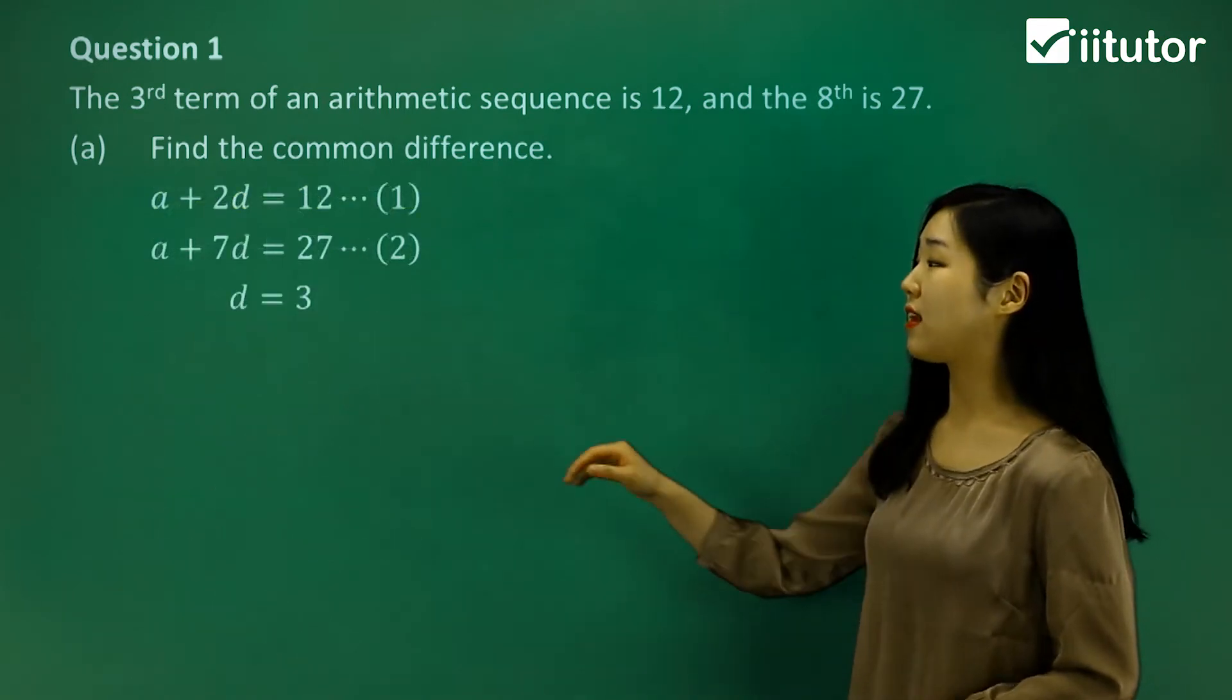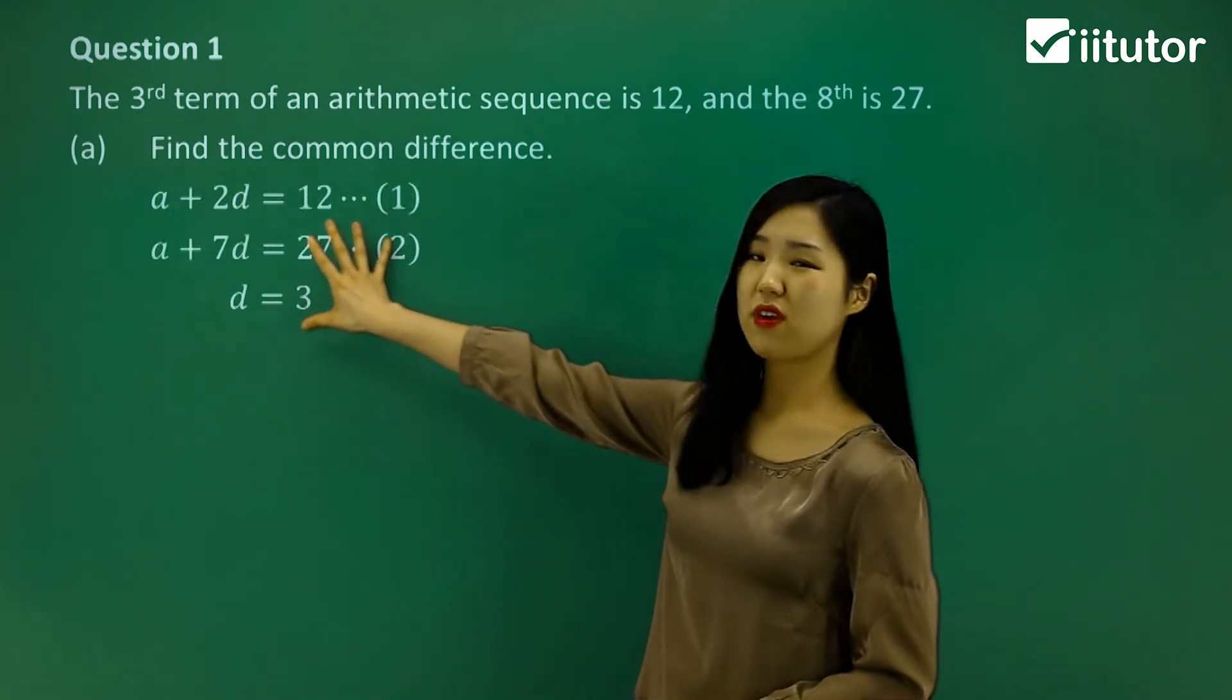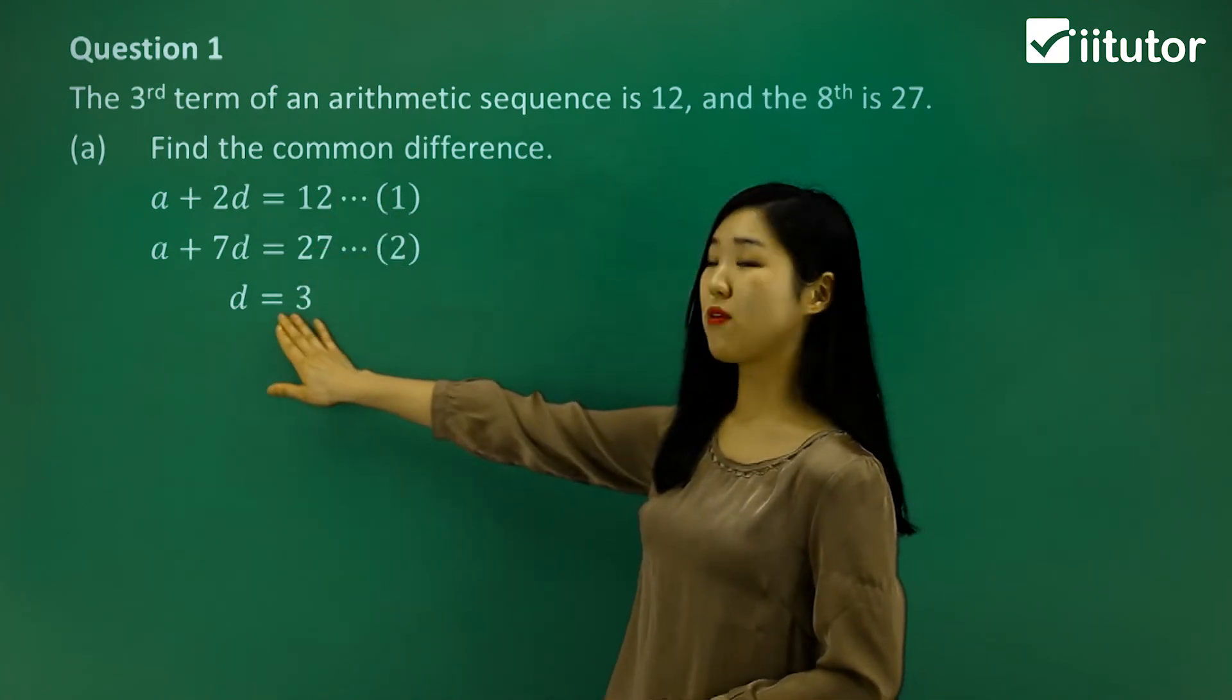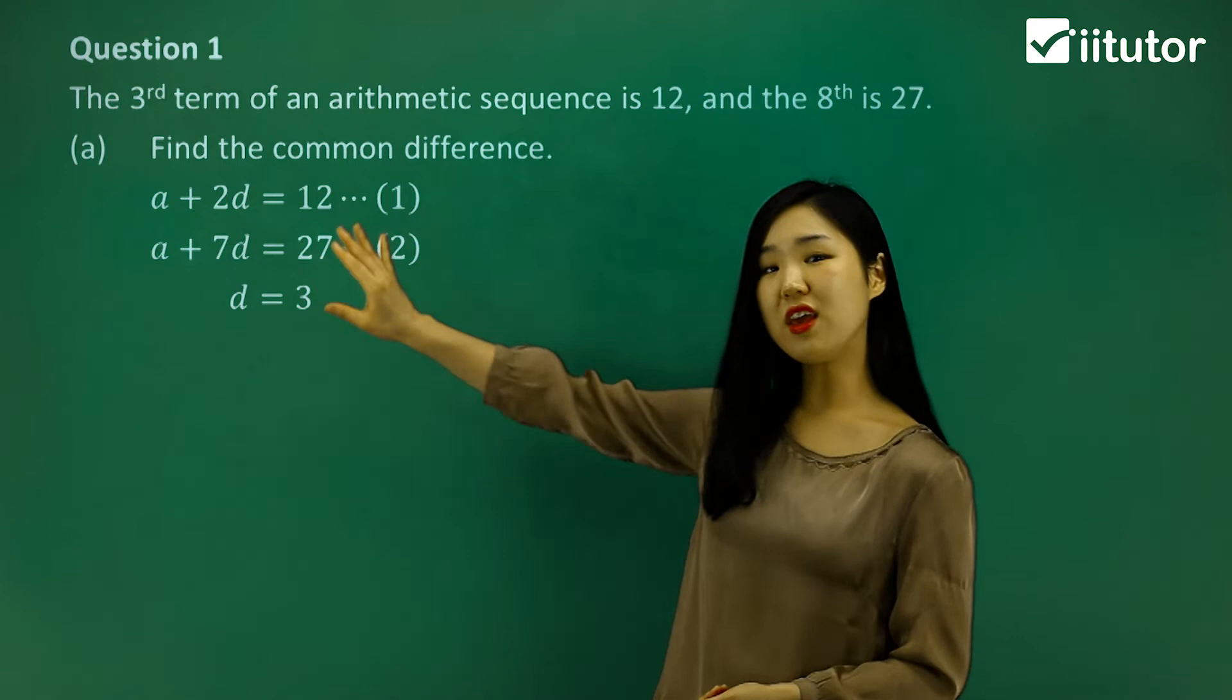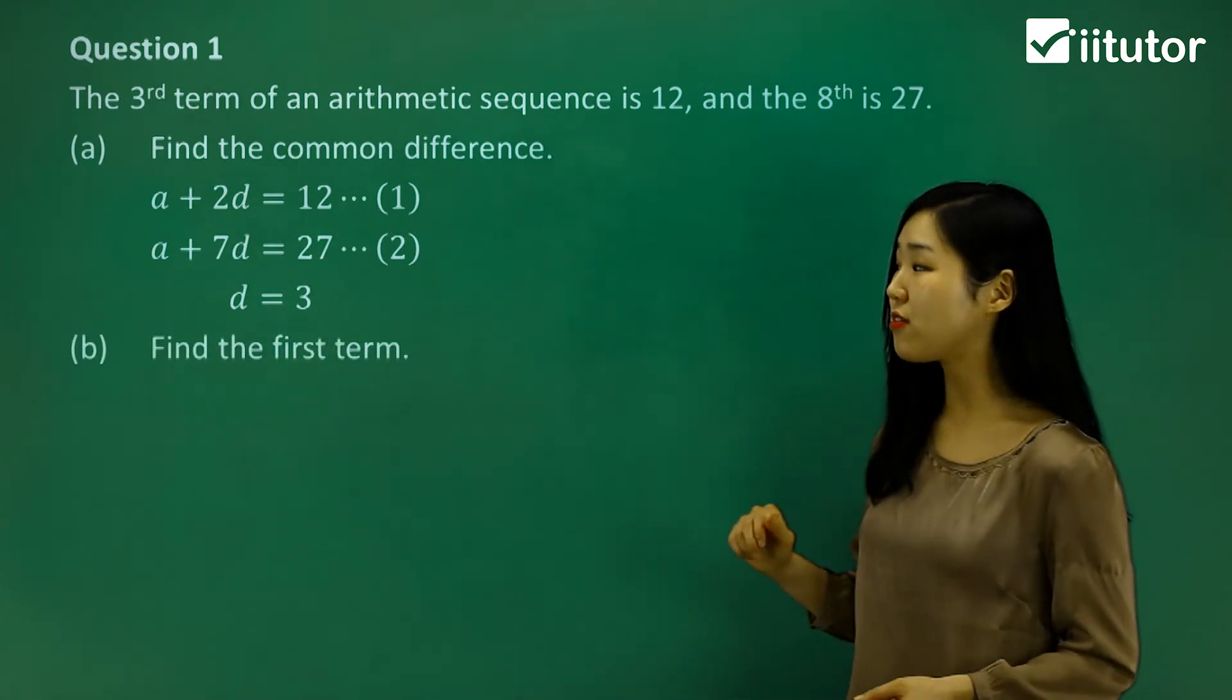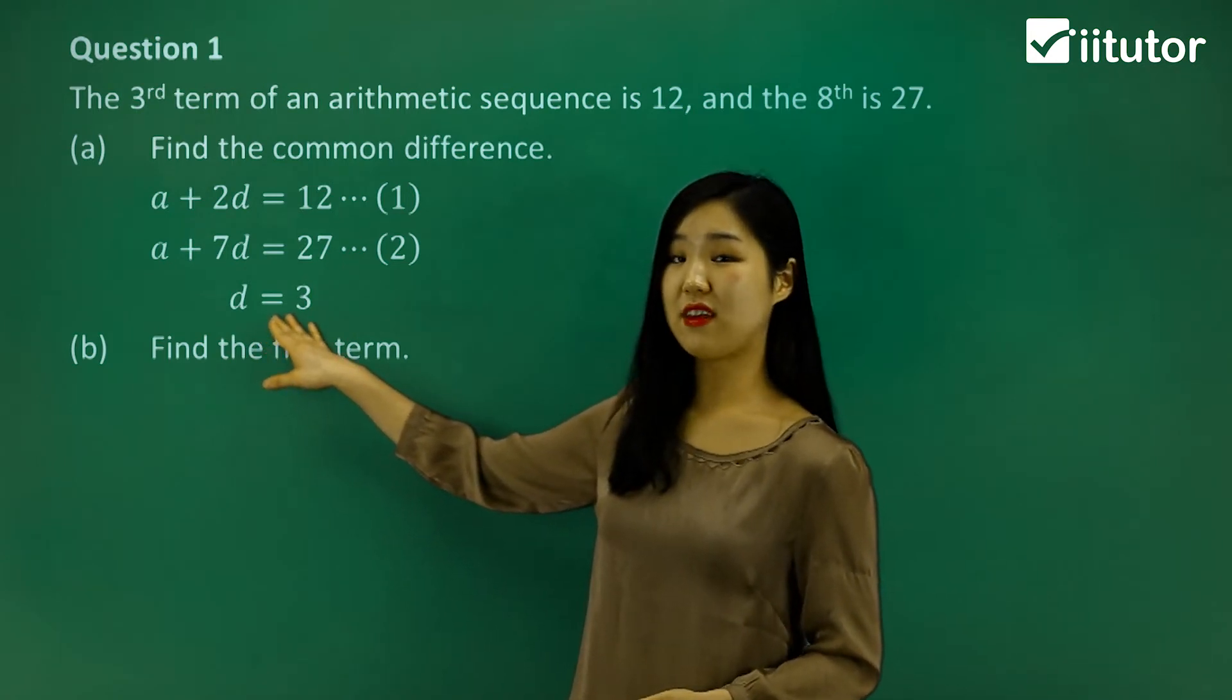So the common difference - I'll just leave it over here. Let's clear everything out. That's the first equation, second equation, and we found that d equals 3. We're going to use this to find part b, which is asking us to find the first term.